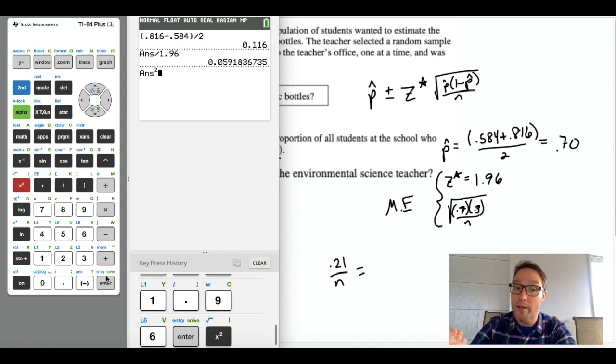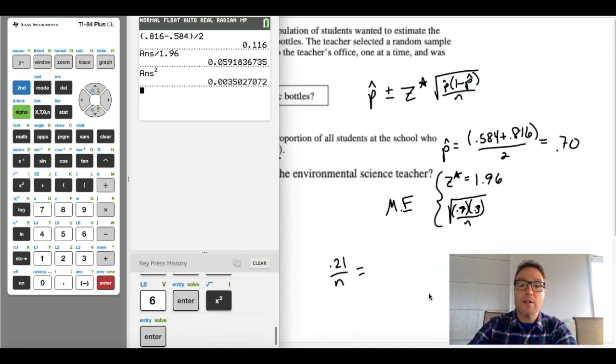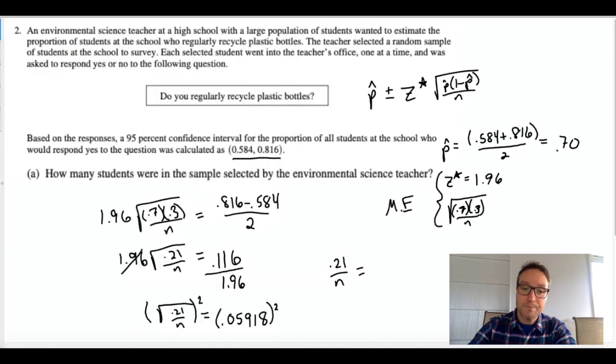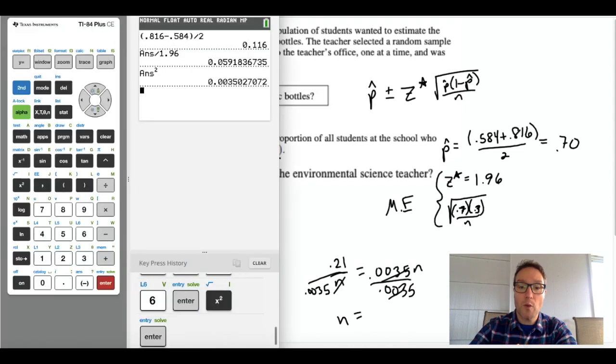Okay, so now I'm squaring both sides. 0.05918 squared is 0.0035, and I'm going to multiply both sides by n. n is a positive number, so if this were an inequality you wouldn't have to worry about switching around the symbol. All right, and now I'm going to divide both sides by 0.0035.